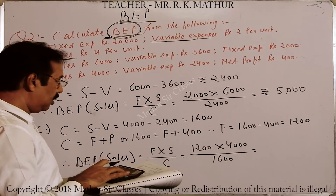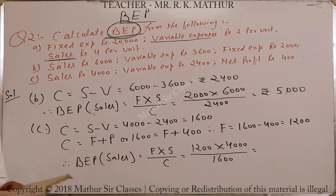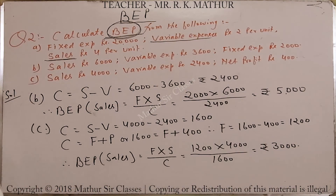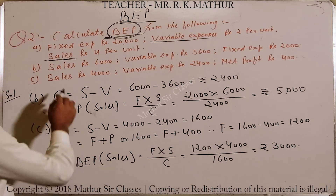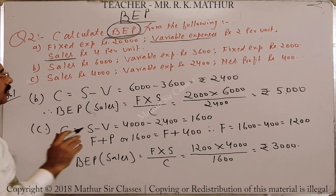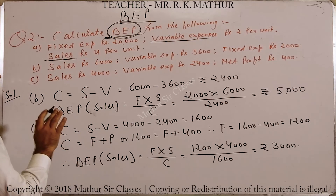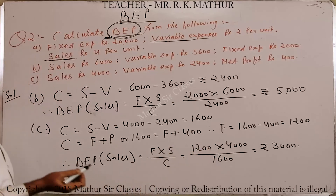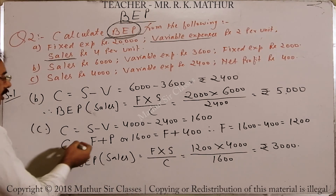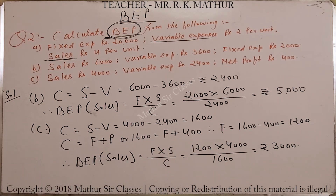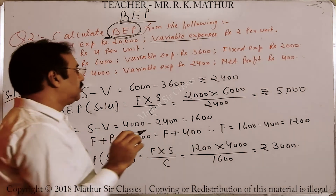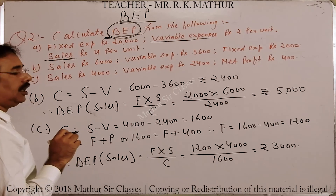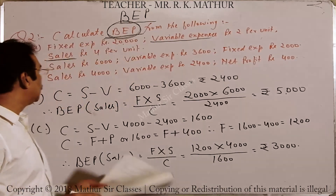1,200 into 4,000 divided by 1,600 — BEP निकल गया। यह fixed यहाँ से भी निकाल सकते थे: sales 4,000, profit 400, तो cost 3,600; variable 2,400, तो fixed = 1,200। तीनों (A, B, C) बन गए। यह सब इसलिए किया ताकि आपको clear हो कि कहाँ कौन सा formula use करना है — यह clear होना चाहिए, नहीं तो BEP बनाने में problem आएगी।